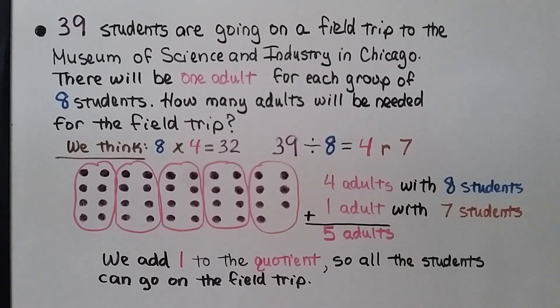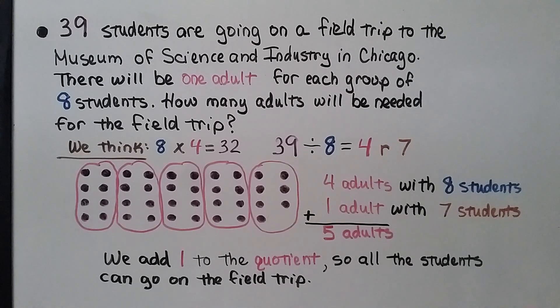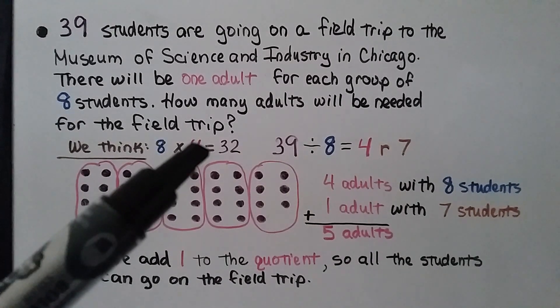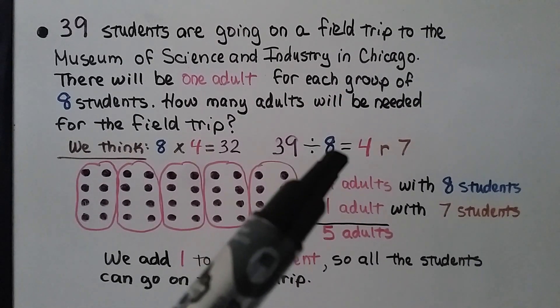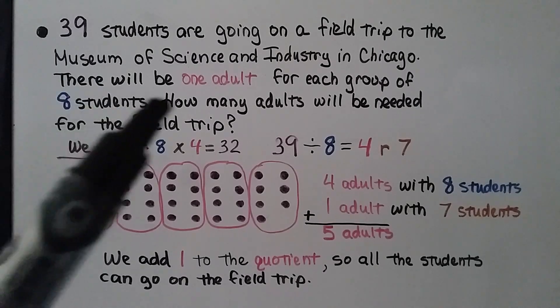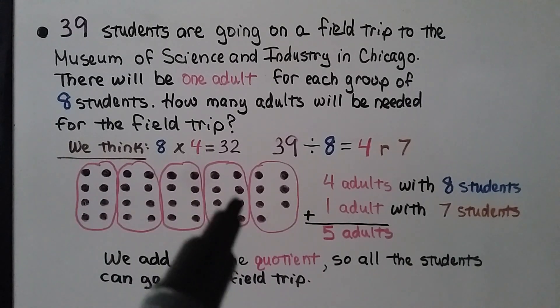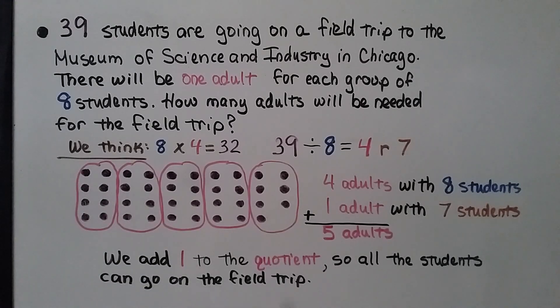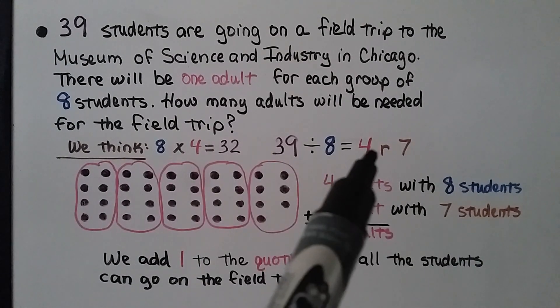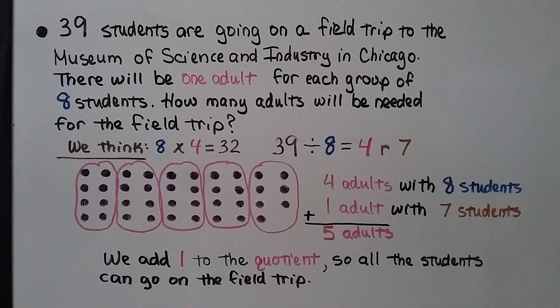Here's our last word problem. 39 students are going on a field trip to the Museum of Science and Industry in Chicago. There will be 1 adult for each group of 8 students. How many adults will be needed for the field trip? Well, we think 8 times 4 is equal to 32, but 39 divided by 8 is equal to 4 with a remainder of 7. And there's 8 students in each group, 1 adult for each 8 students. So, we can make 39 students as 39 counters, and here's 1 adult with 8 students, another adult with 8 students, and another one, and another one. So, that's 4 adults with 8 students each. Then, we can just add 1 to the quotient, this 4, and make it a 5, and we'll have another group with 7 students in it. So, there will be 5 adults, that way all the students can go on a field trip and have an adult with their group. We just added 1 to the quotient for this problem.